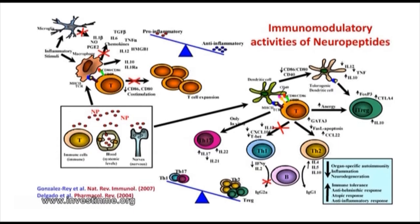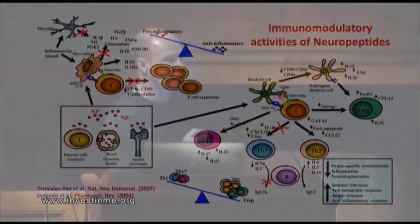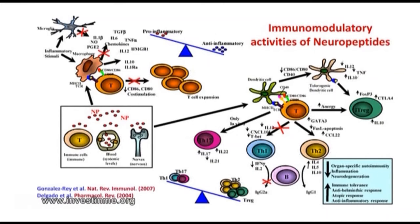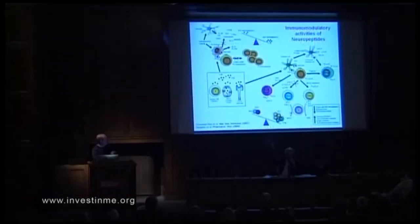Another important function: the presence of these neuropeptides induces the emergence of regulatory cells, which is critical for maintaining tolerance, along with other collaborating cell types. So in the presence of these neuropeptides, we are shifting the previous pro-inflammatory environment toward an anti-inflammatory environment, promoting regulatory cells and partially Th2 cells, while reducing Th1 and Th17 cells.